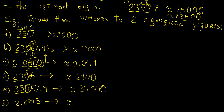For the next example, we have 2 followed by a 0, but that zero is preceded by a 2, so it does count as a significant figure. We then look at the digit to the right, which is 7 — closer to 10, so we round up. That makes the zero become 10, carrying a 1 to the next digit, giving us 2.1.